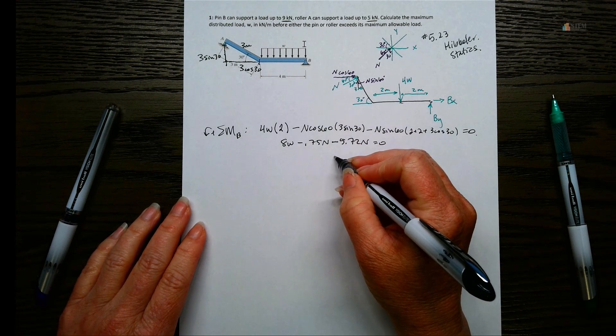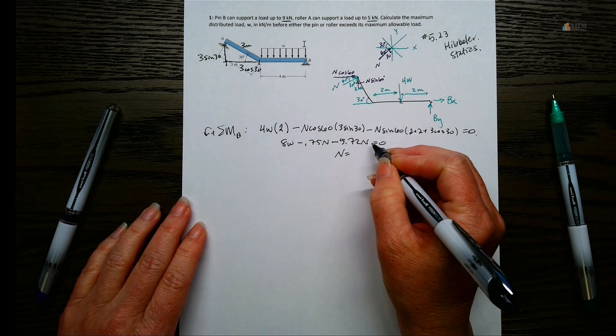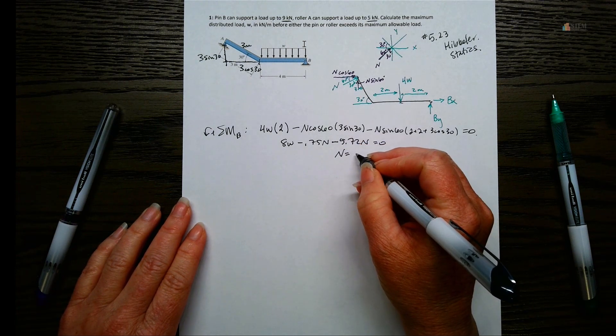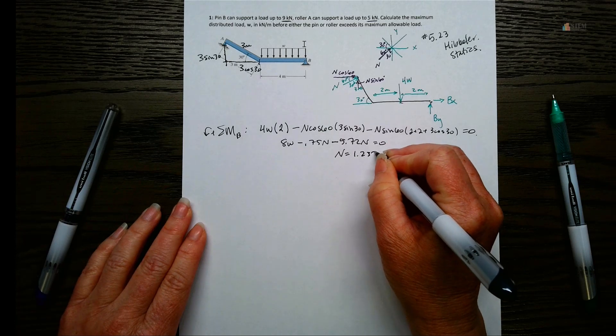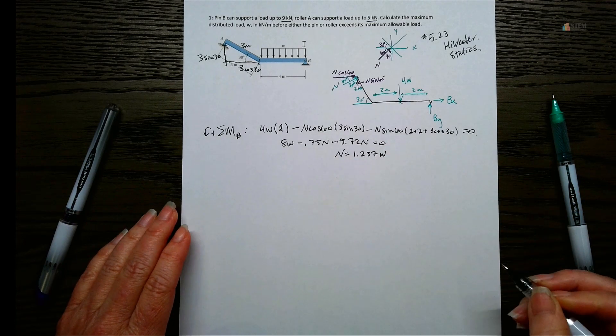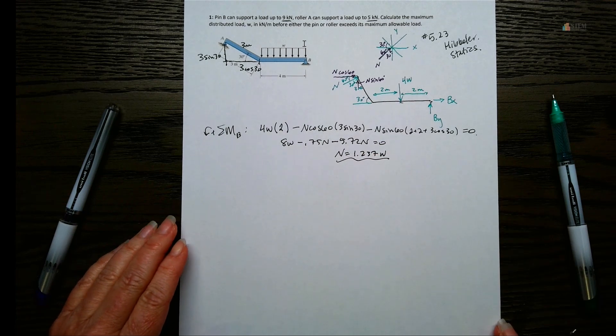So let's just leave N alone. And let's get an equation for N as a function of W. And then you'll see what we'll do with it in just a little bit. So group these two together and then solve for N. And we're going to get N is 1.237W. And let's hang on to that.